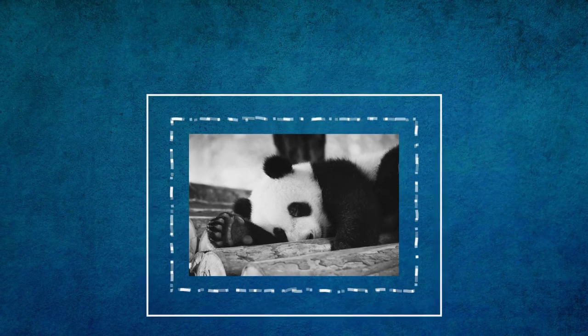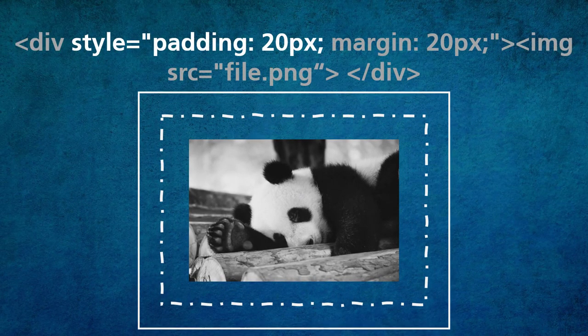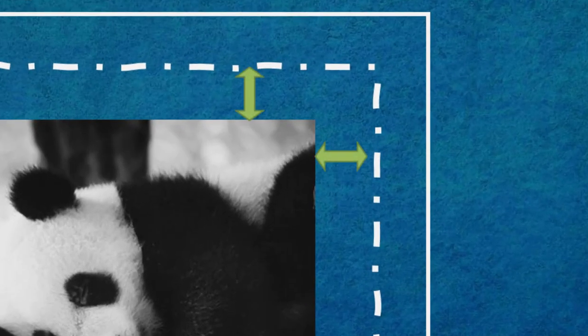Padding is different than a margin because padding deals with the space in between the border and the image itself, or the element that you have. So in this code, in addition to my margin of 20 pixels, I also want padding of 20 pixels. For the person on the website, they're going to see 40 pixels total — 20 plus 20. Specifically, there's 20 pixels for the margin and 20 pixels for the padding. Padding gives space between the border and the picture, and margin gives space between the border and all of the other content on the page.